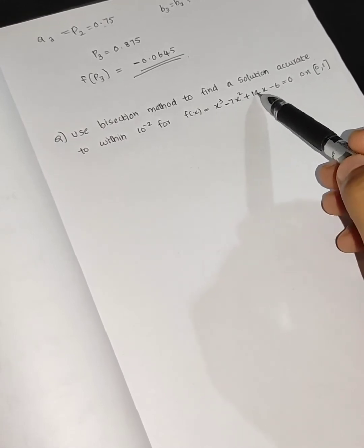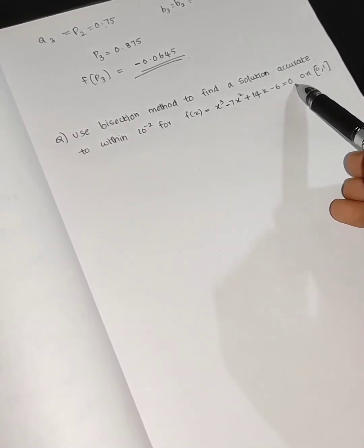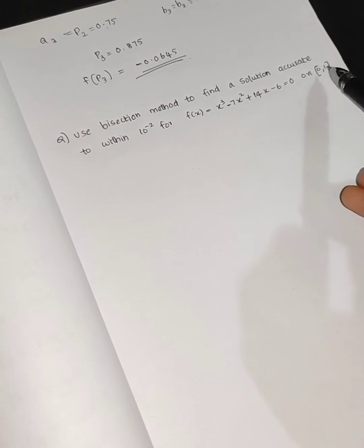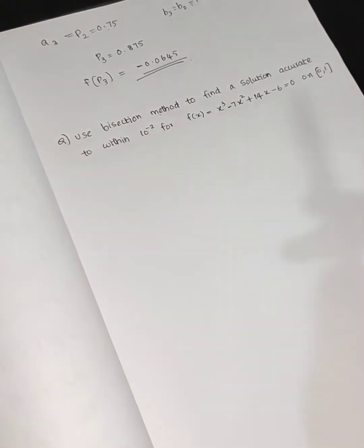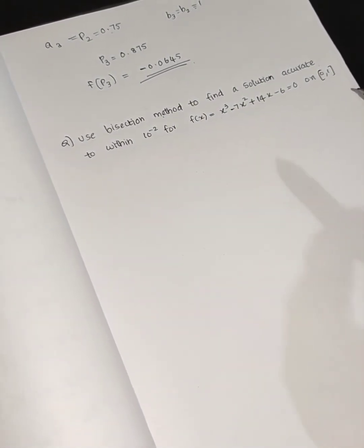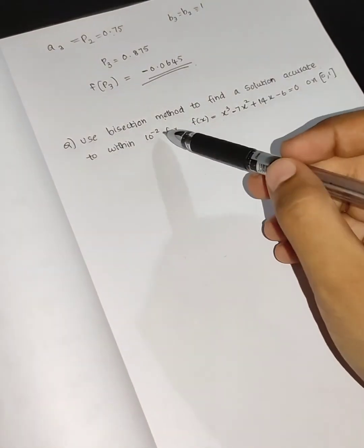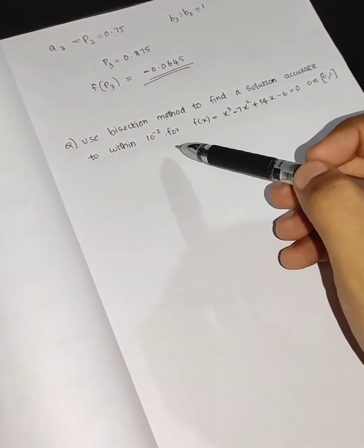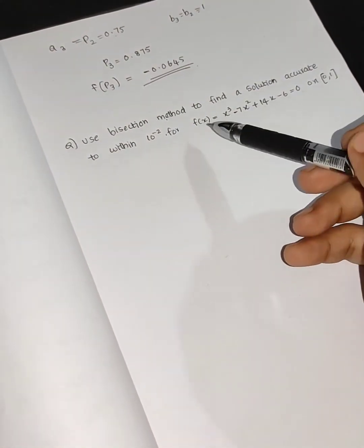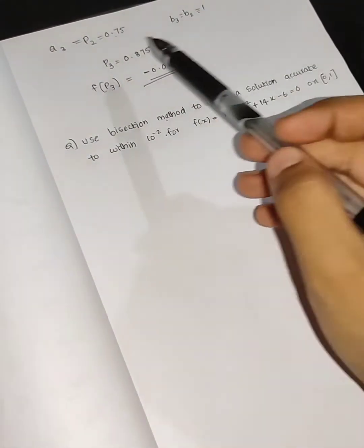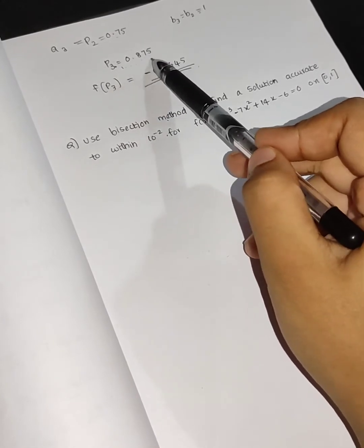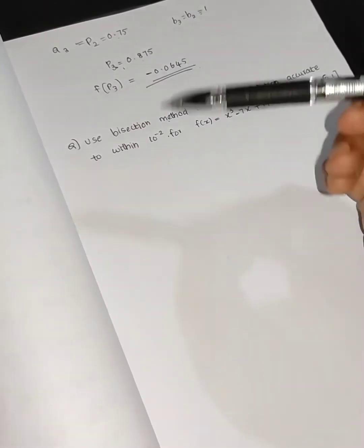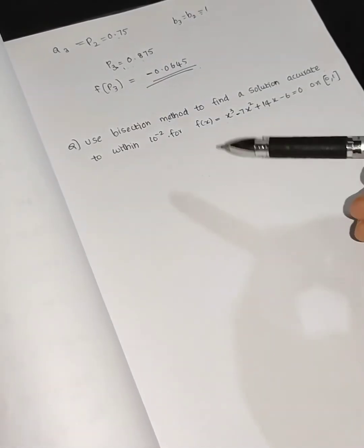B3 = 0.75. The bisection method is applied with the tolerance of 10 raised to minus 2, checking 3 values, then 3 more values.